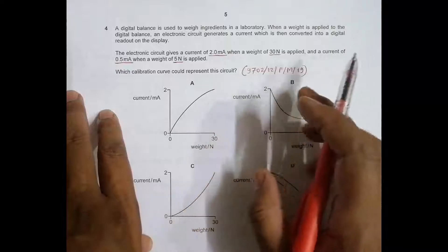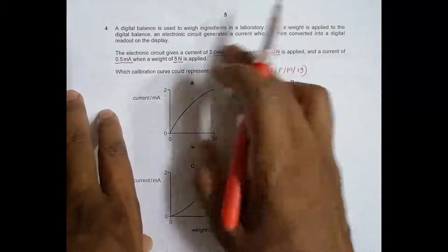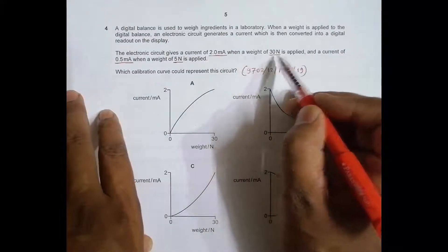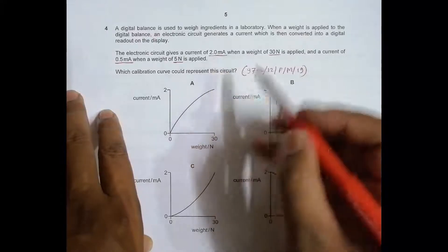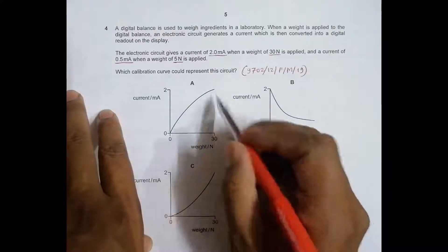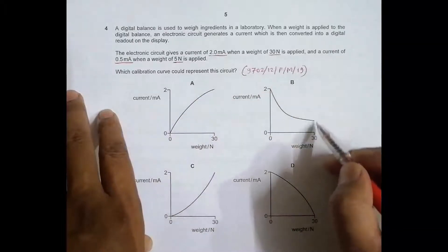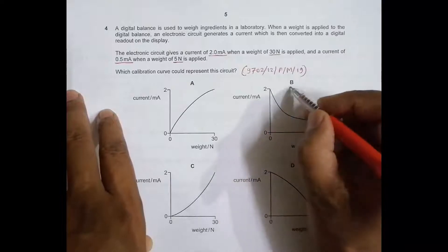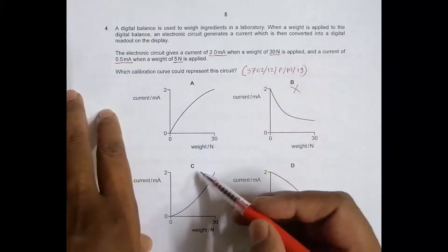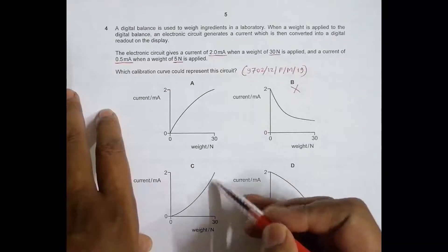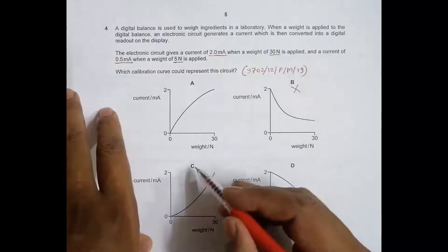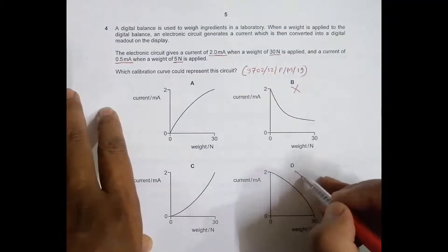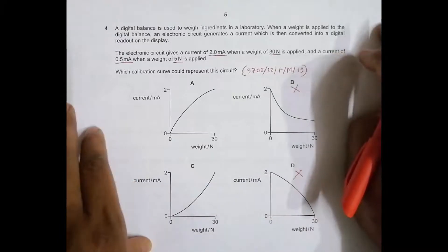We have to find which curve would be representing this type of circuit. First, at 30 Newtons the reading is 2 milliampere. This qualifies option A. At 30 Newtons, option B shows less than 2 milliampere, so this does not qualify. Option C also qualifies at 30 Newtons showing 2 milliampere. Option D shows 0 milliampere at 30 Newtons, so this disqualifies. The only two remaining are choice A and D.